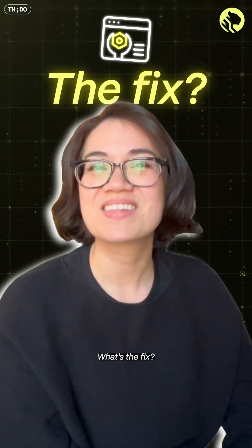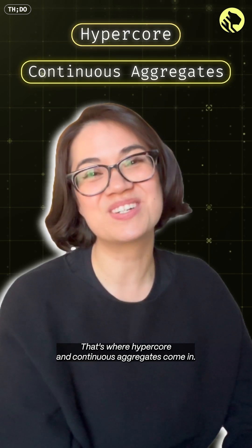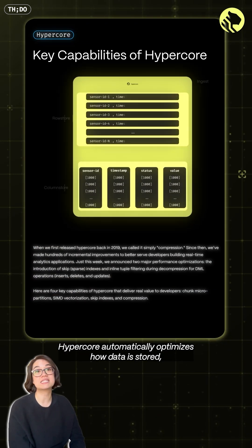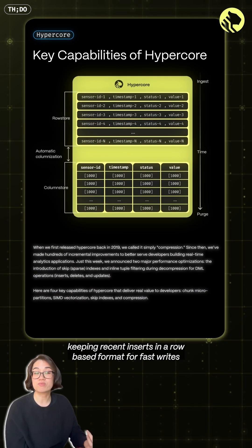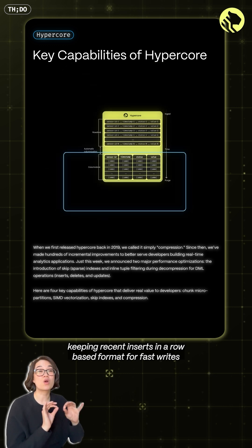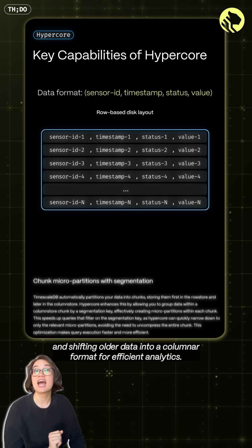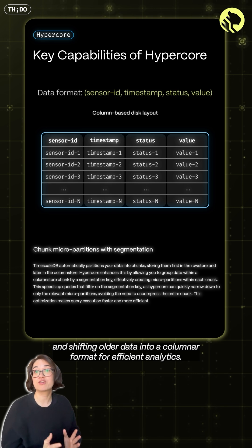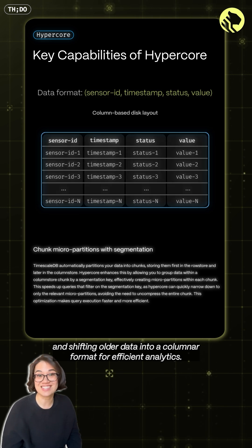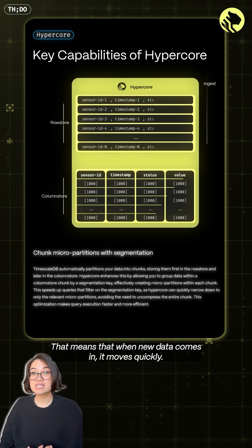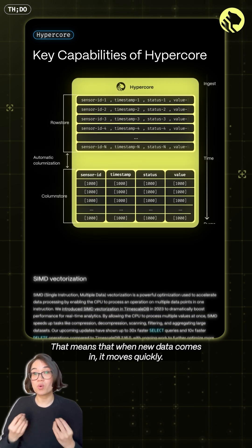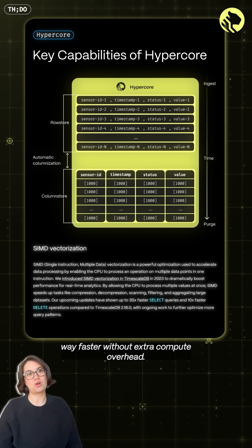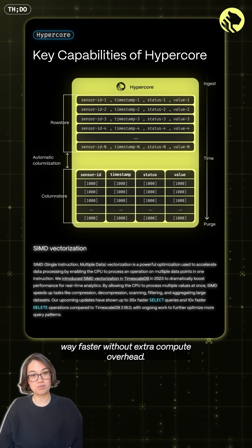What's the fix? That's where HyperCore and Continuous Aggregates come in. HyperCore automatically optimizes how data is stored, keeping recent inserts in a row-based format for fast writes and shifting older data into a columnar format for efficient analytics. That means when new data comes in it moves quickly, but when you need to analyze trends, queries run way faster without extra compute overhead.